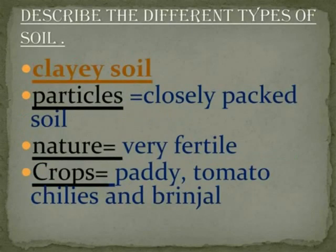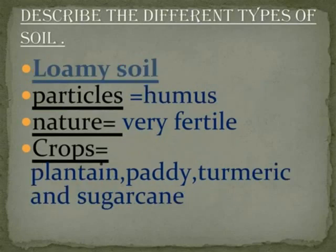Clay soil — Particles: clayey. Water retention: very poor. Crops: Paddy, Tomato, Chilies and Brinjal. Loamy soil — Particles: humus-rich. Water retention: very porous. Crops: Turmeric and Sugarcane.